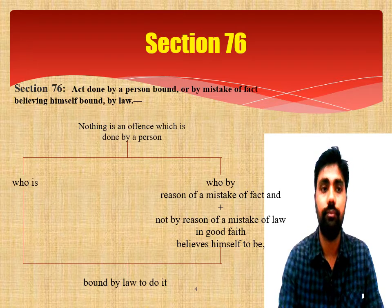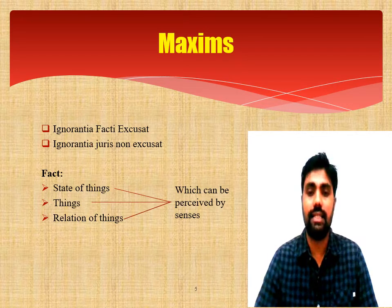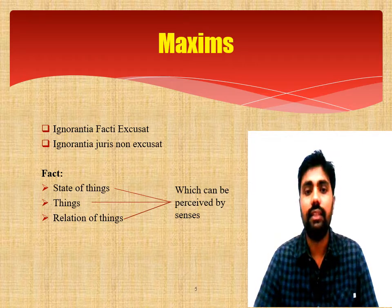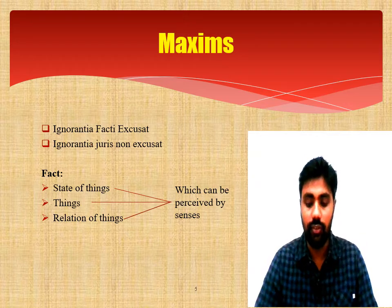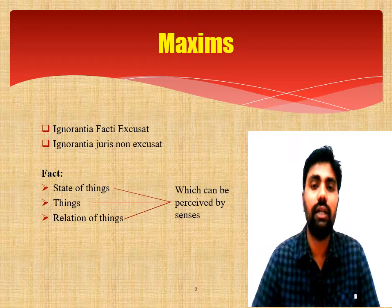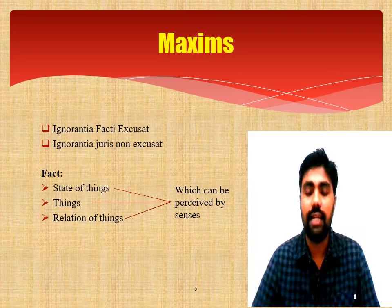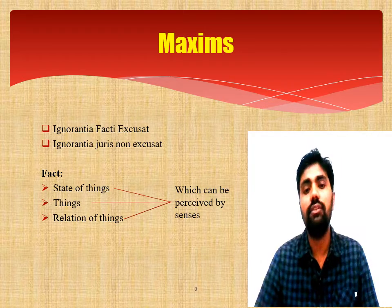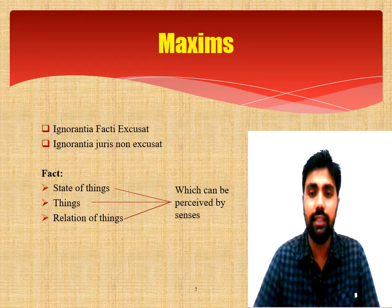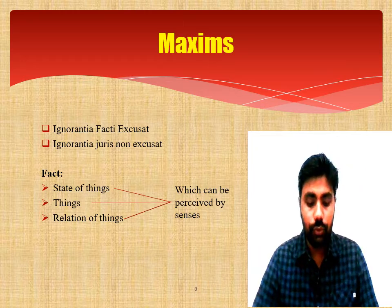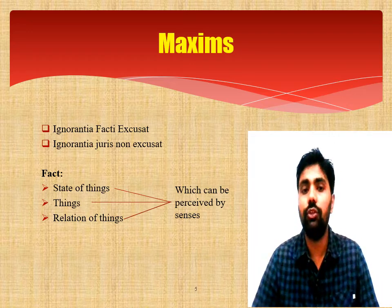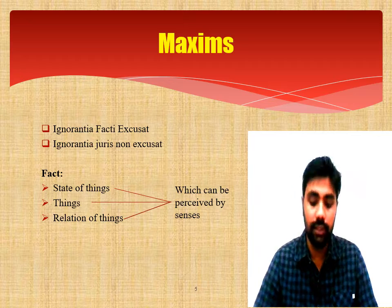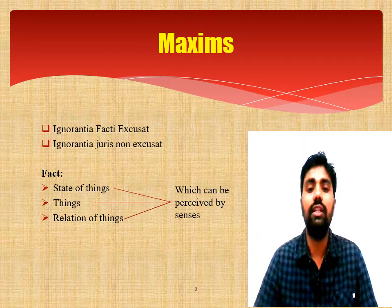These two maxims are most important with respect to mistake of fact. Ignorantia facti excusat follows the doctrine of mens rea — in case of mistake of fact, there is absence of mens rea, and therefore the person can be exempted from criminal liability, or in simple terms it is called factual error. Ignorantia juris non excusat — if the person is breaking the law, it has no excuse at all.